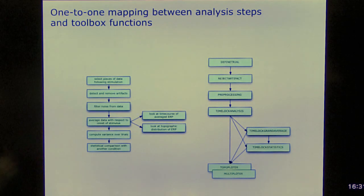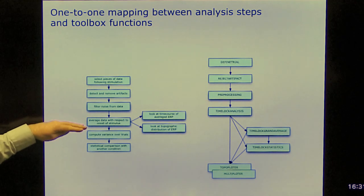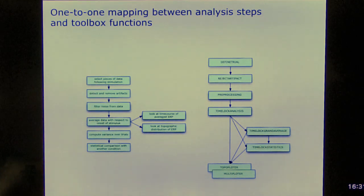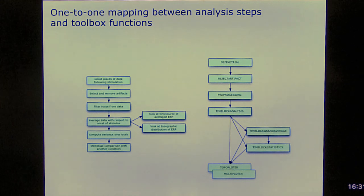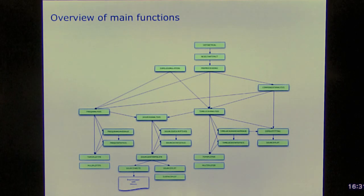The general concept of FieldTrip is that we try to provide a one-to-one mapping between conceptual steps in the analysis and FieldTrip toolbox functions. So we start with selecting pieces of data, detect and remove artifacts, then we filter, we average and then we compute variance and we use statistical comparison. All of those steps are implemented in individual FieldTrip functions. And the nice thing is that you can combine these FieldTrip functions in many different ways. So this is an overview of the FieldTrip functions, like of the main FieldTrip functions. But this is an overview that I made in 2007. By now we have many more FieldTrip functions, like slightly more than 100 functions. And you can combine them in many different ways. That gives a lot of flexibility. But of course it also begs the question how do you keep an overview of all these functions that you have.